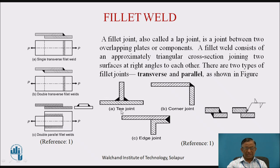In a parallel fillet weld, the weld section is parallel to the load acting on the joint. There are two fillets, making it a double parallel fillet weld used in practice. Other types of fillet welds include the T joint, in which two perpendicular plates are connected resembling the letter T, the corner joint for plates perpendicular to each other, and the edge joint where two overlapping parts are connected at the edge.